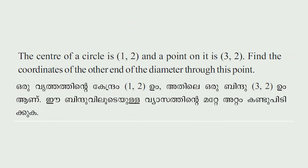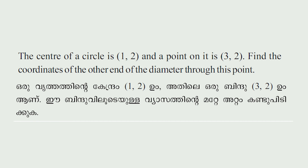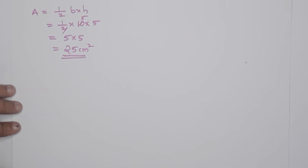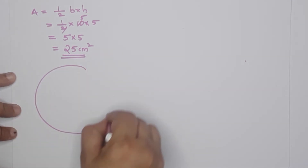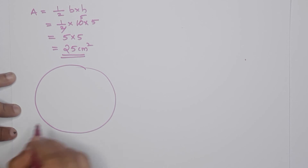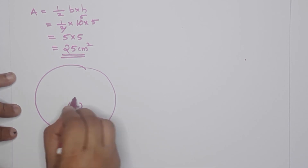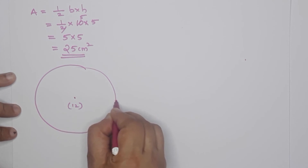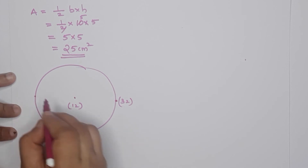Next question: The center of a circle is (1, 2) and a point on the circle is (3, 2). Find the coordinates of the other end of the diameter through this point. So the center O is at (1, 2) and one end of the diameter A is at (3, 2).